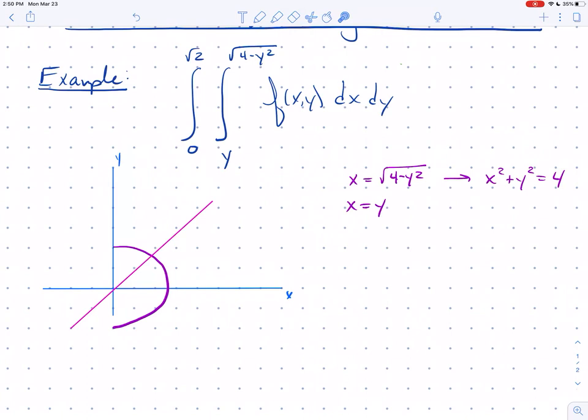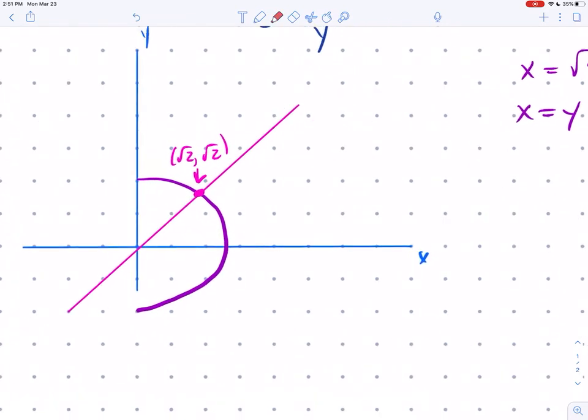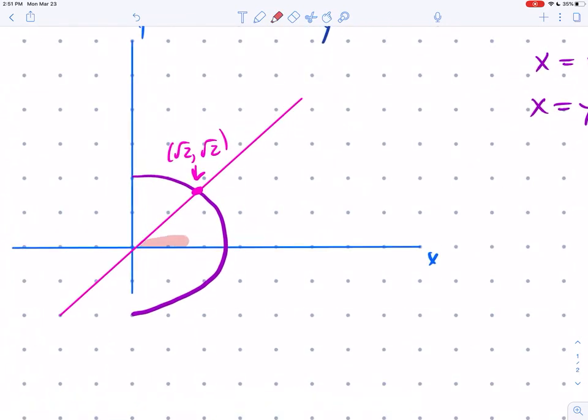Now what's y doing? y is going from 0 to root 2. If you solve when does x equal y, what's the curve of intersection right here? You'll get 2y squared equals 4, so y squared is 2, so y is root 2. The point is, this is the point root 2 comma root 2 sitting right there. That's actually our region of integration.